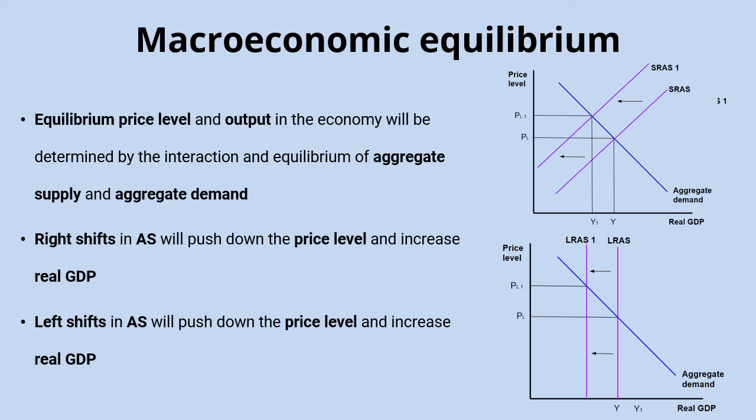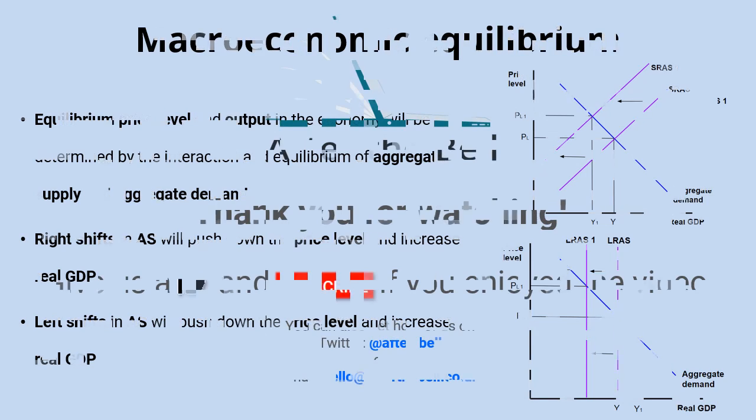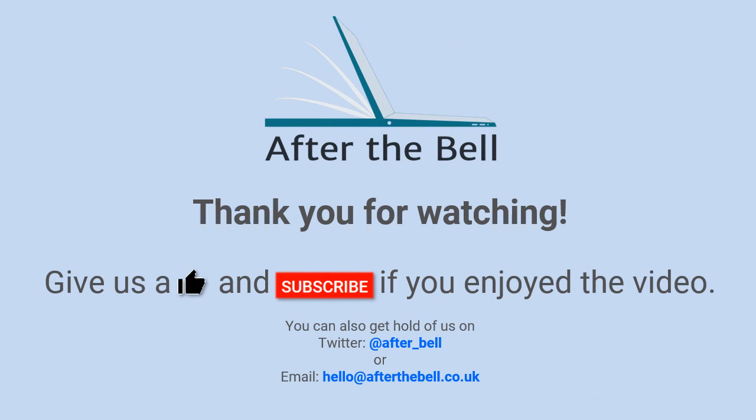Left shifts in aggregate supply push up the price level whilst also reducing real GDP. If sustained in the long run, they'll reduce the productive capacity of the economy.